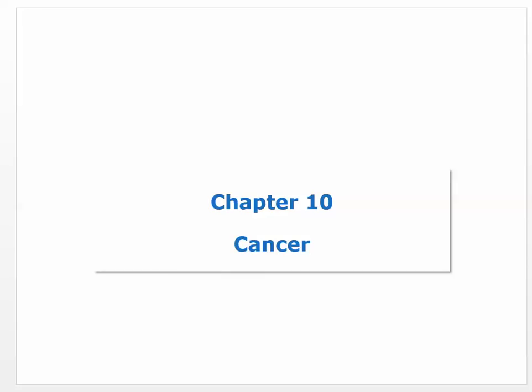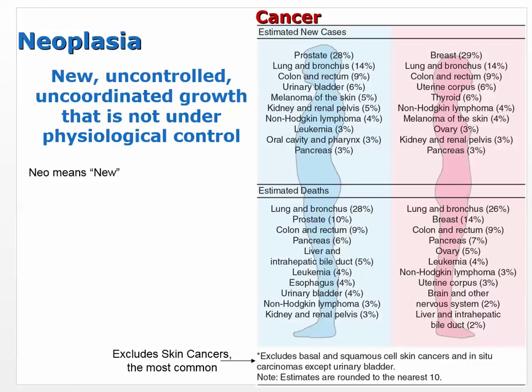This is chapter 10 from the Huether book, covering the pathophysiology of cancer. Another word for cancer is neoplasia, which if you break down the word, means a new, uncontrolled, uncoordinated growth that is not under physiological control.